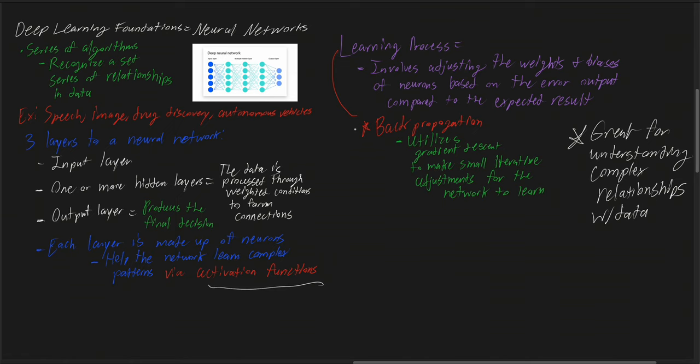The learning process as the data is going through the neural network involves adjusting the weights and biases of neurons based on the error outputted compared to the expected result. This whole learning process is called backpropagation — the process through which every single step within the layers of a neural network is computed to recognize patterns within data. A good use case of backpropagation is using gradient descent to make small iterative adjustments for the network to learn and form stronger connections.